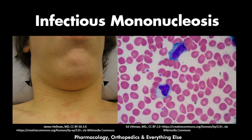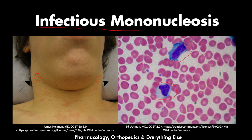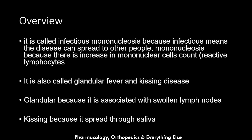Welcome to this video on infectious mononucleosis. It is a contagious infection causing lymphadenopathy, as shown in the picture, and lymphocytosis, as shown in this blood film. It is called infectious mononucleosis because it can spread to other people, and mononucleosis because there is an increase in mononuclear cells, also known as reactive lymphocytes.